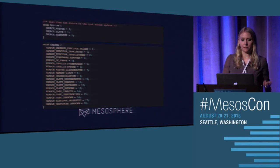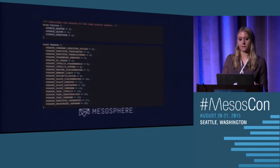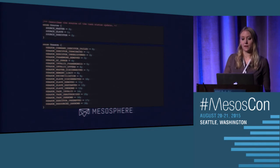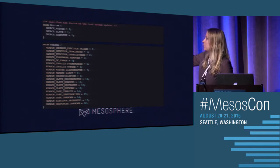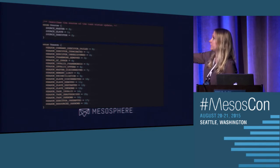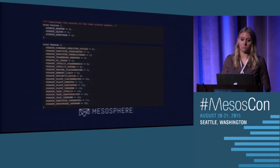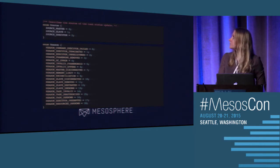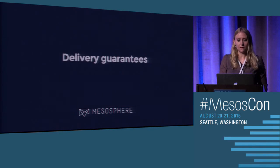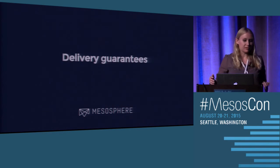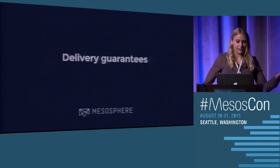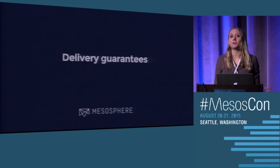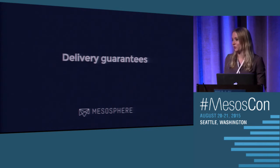Here are the different reasons for the task status update — this is pretty useful if you want to debug, because you can figure out exactly why the task was updated in the way it is, such as executor terminated.